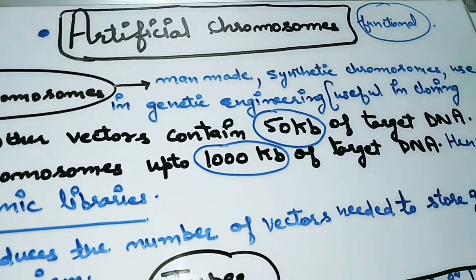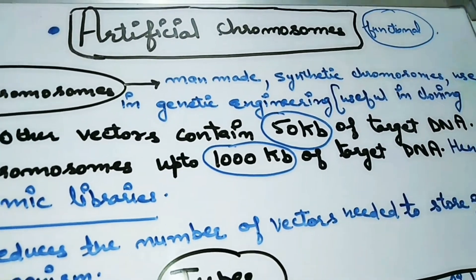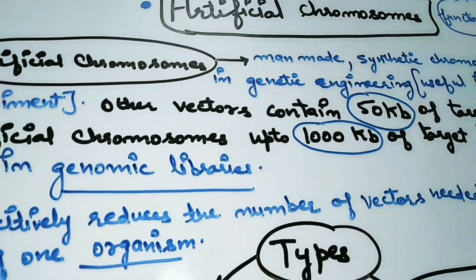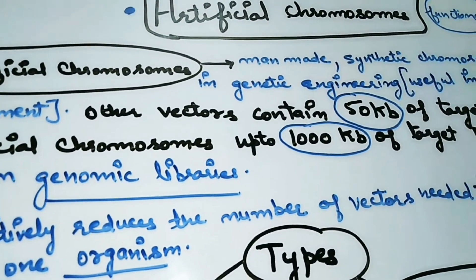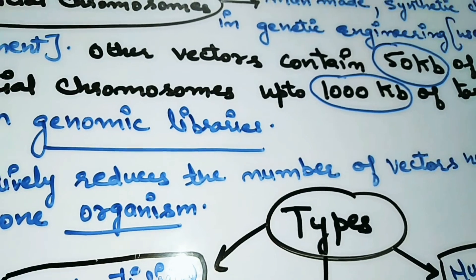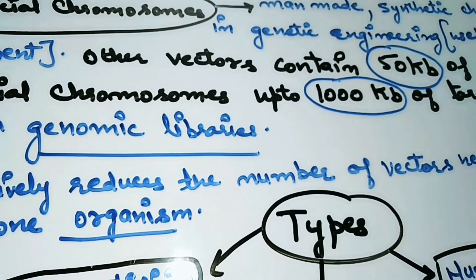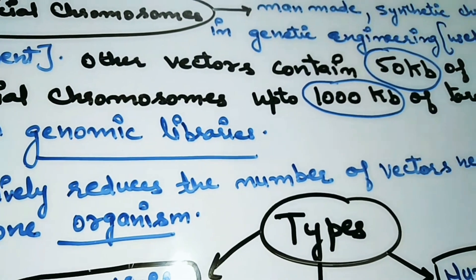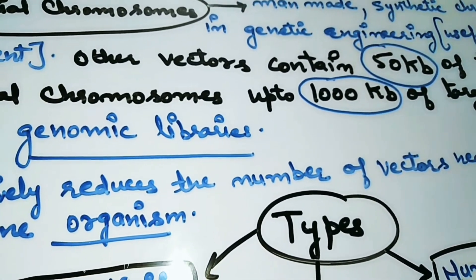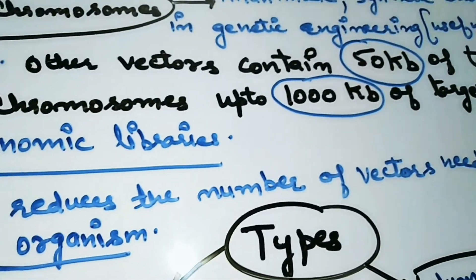So what are artificial chromosomes? These are man-made or synthetic chromosomes used in genetic engineering, useful in cloning experiments, and also for the formation of genomic libraries. They contain fragments of targeted DNA which are then inserted into the carrier chromosome and then inserted into the host cell where they will be expressed.